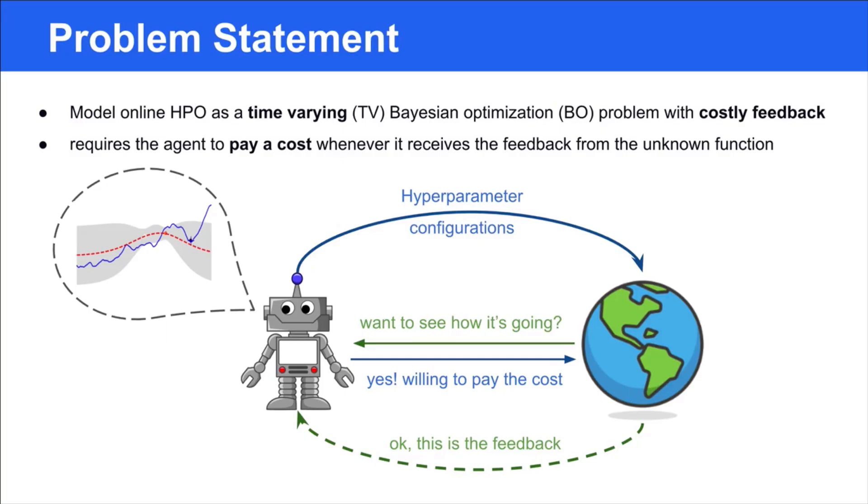At each round, the agent selects the hyperparameter configurations to sequentially maximize the reward signals. Since the reward feedback is obtained through evaluation on the validation set, which is usually expensive, the agent is allowed to skip the evaluation or pay a certain computation cost to see the reward.